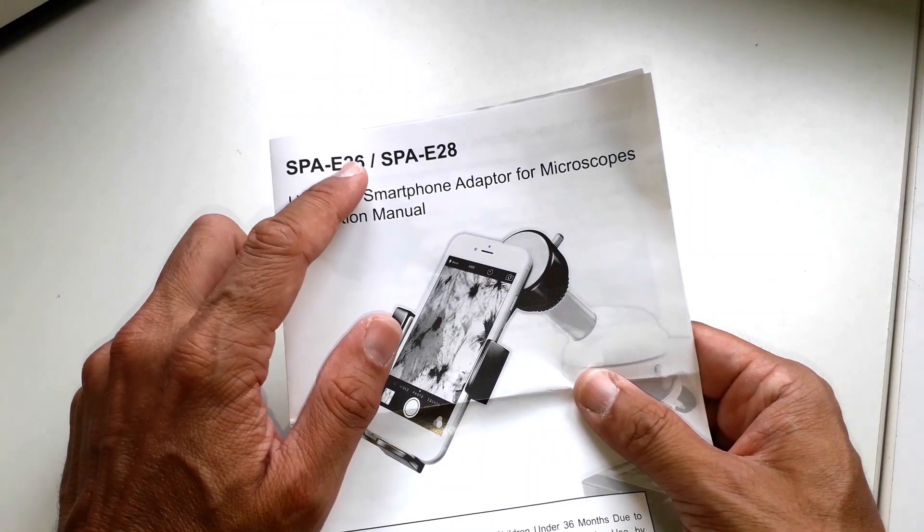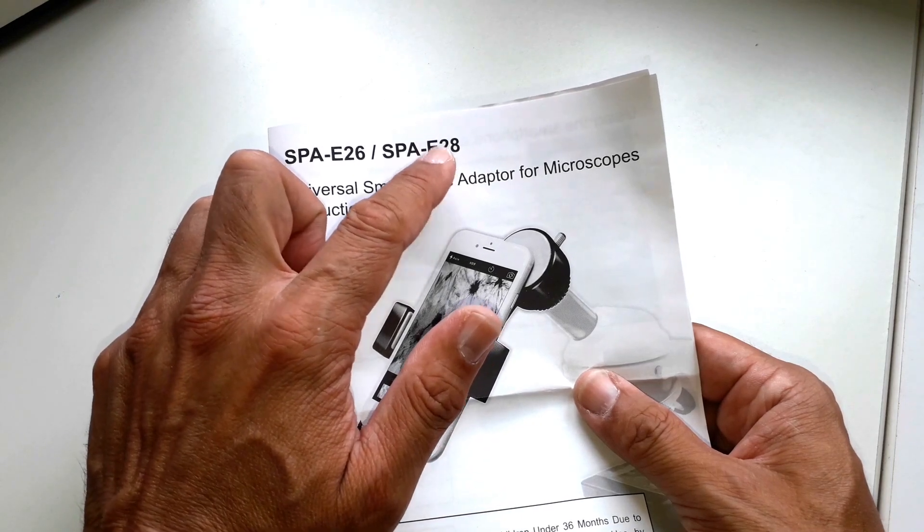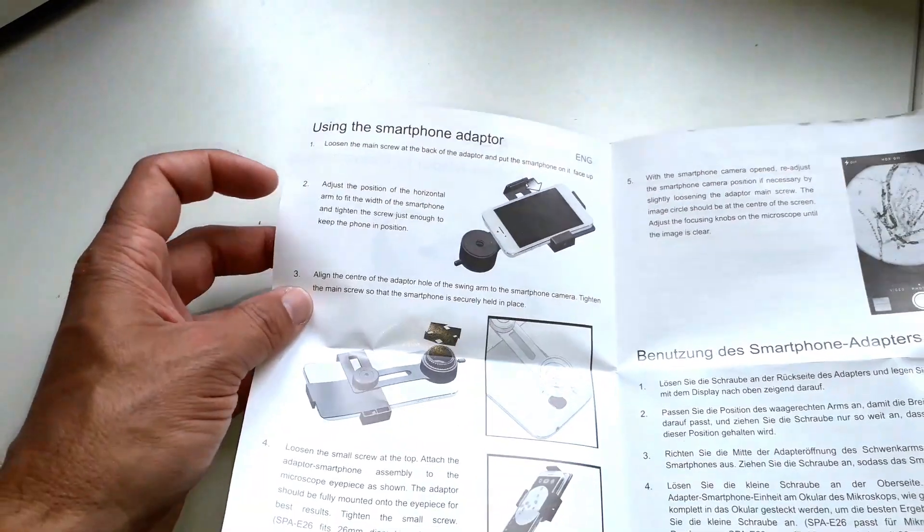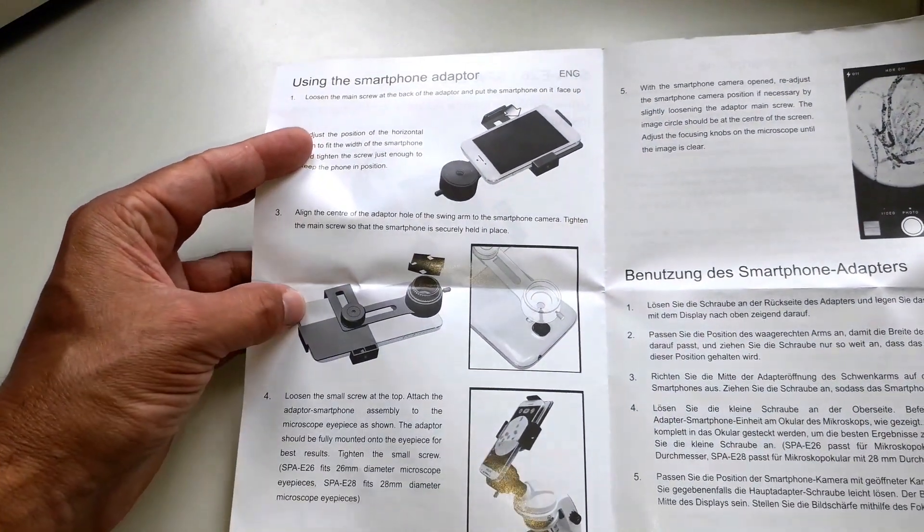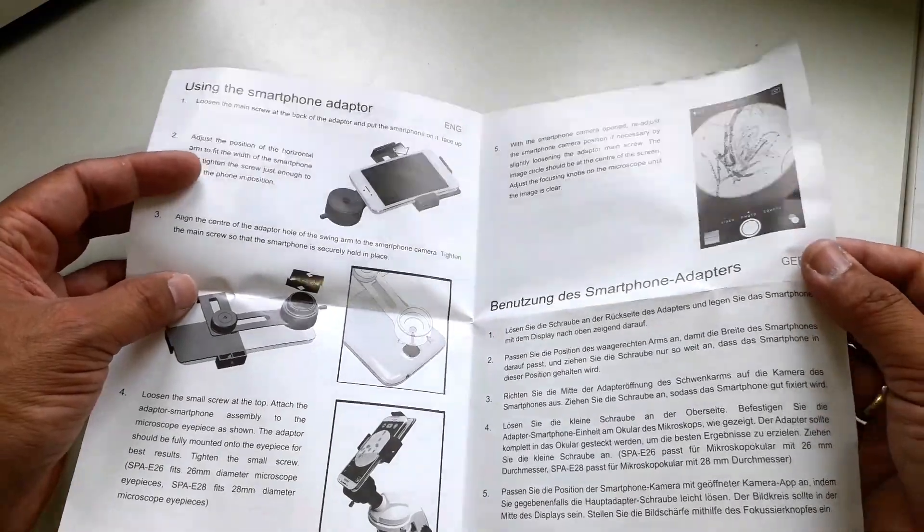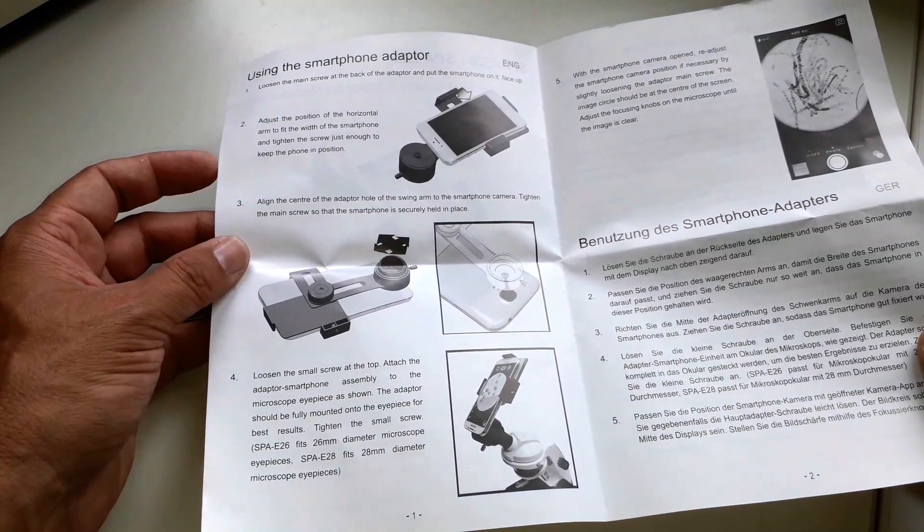As I mentioned there are two types of adapters. This one is for the 28 millimeter eyepieces. Instructions are all very clear in several languages and also free of mistakes. They actually proofread it. It's not always the case that the instructions are error free but in this case the instructions were quite useful.